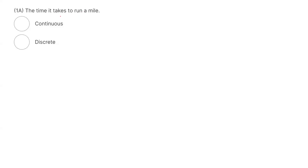What is this random variable? Is it continuous or is it discrete? The time it takes — so time is your random variable. Time it takes to run a mile. Remember that it is a continuous random variable. We cannot count time.